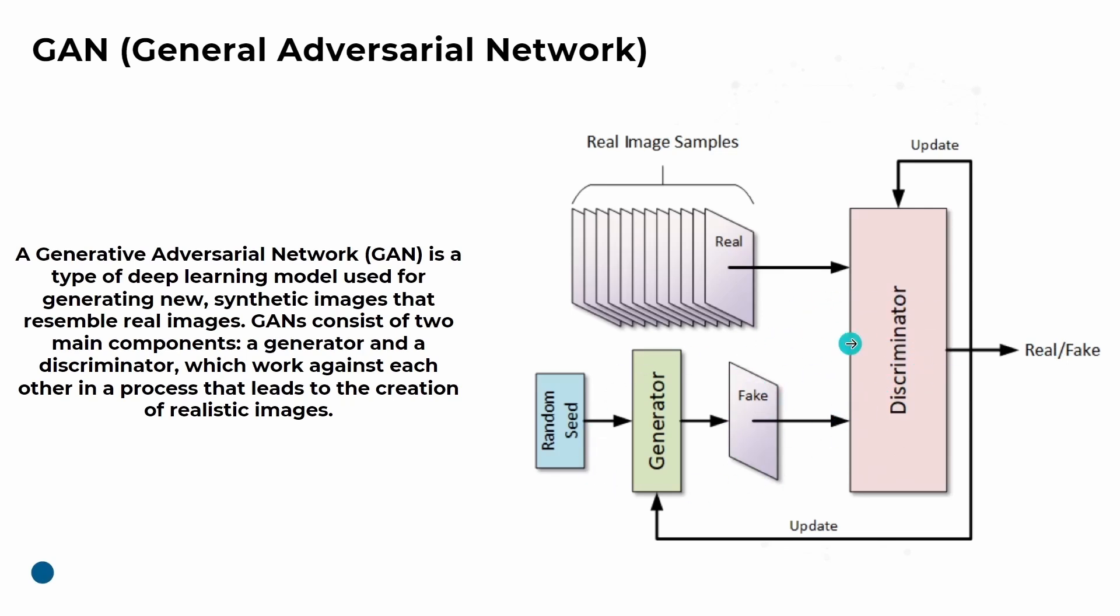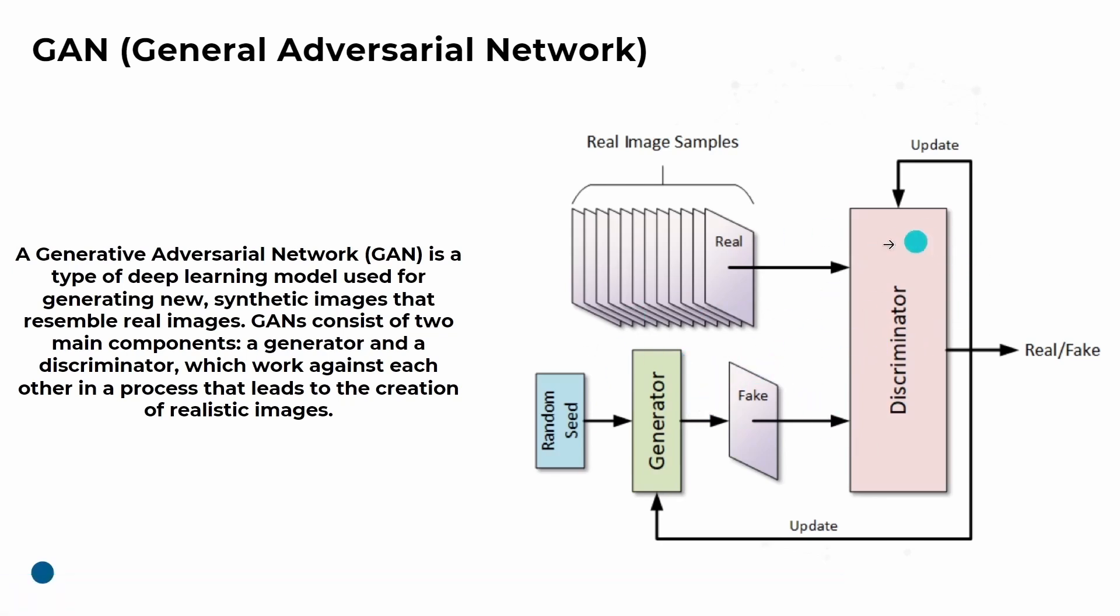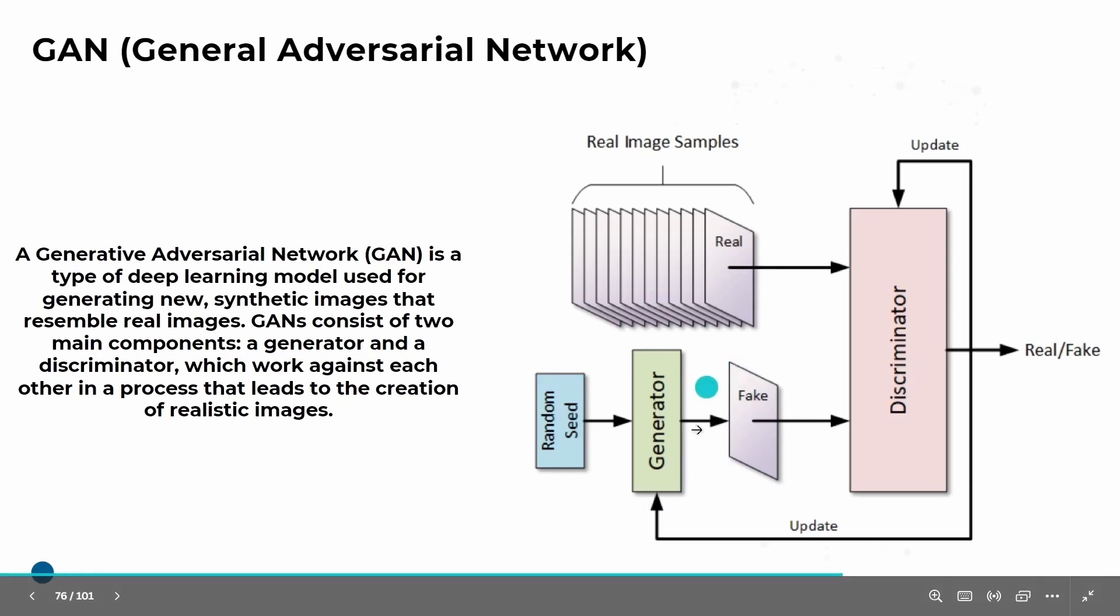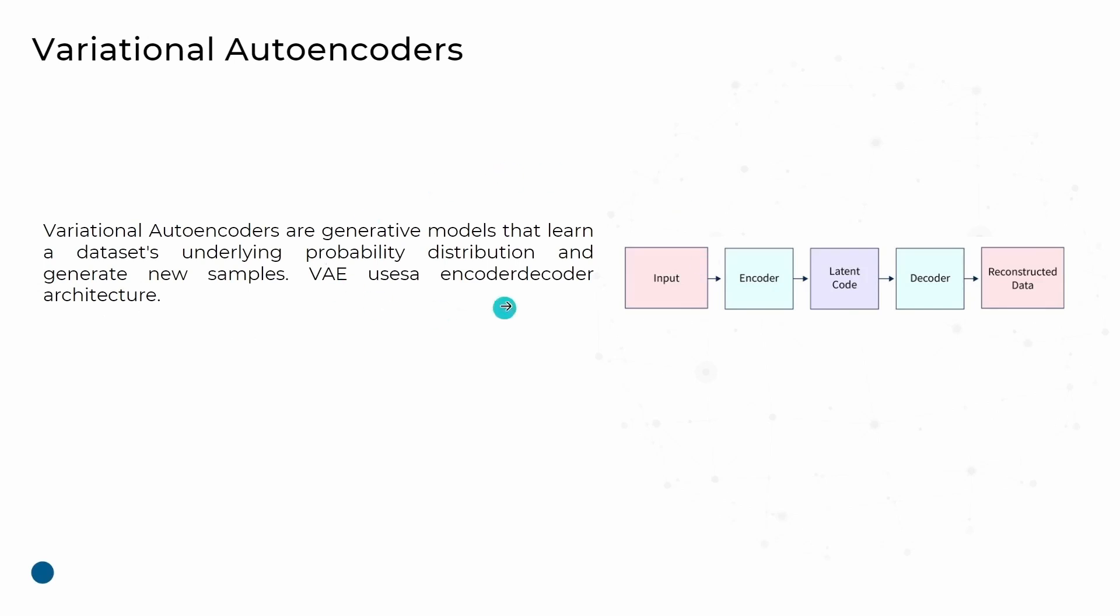When does it stop? When the discriminator is no longer able to classify that the generator's output is fake, and the generator is able to produce good quality images that directly resemble real images.